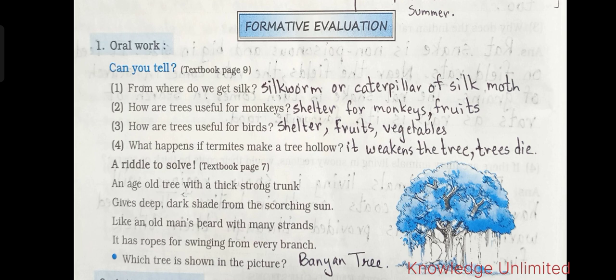Question three: how are trees useful for birds? Trees provide shelter for birds — birds make nests on trees. Birds also get to eat fruits, vegetables, and leaves from trees. Question four: what happens if termites make a tree hollow? It weakens the tree and the tree might even die.